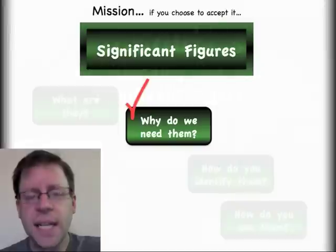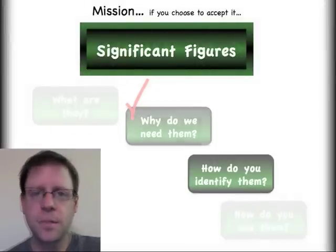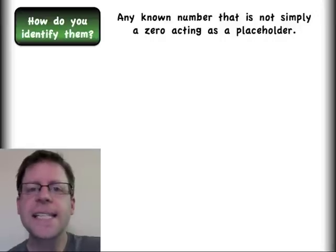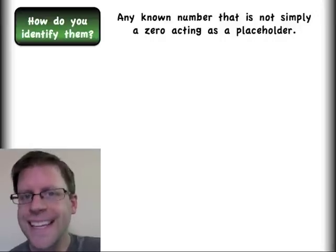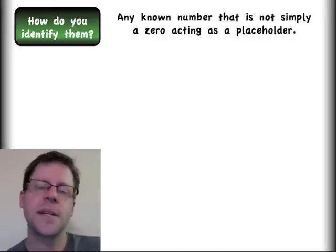So why do we need sig figs? We need them so that we can keep ourselves in check, so that we don't overstate any answers. So how do I actually identify how many significant figures I have?